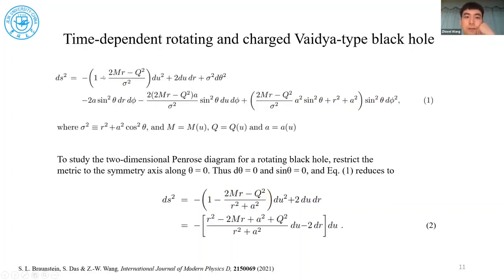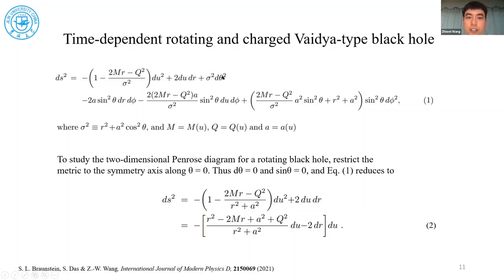This is the metric we use — a rotating charged, Kerr-Newman-type black hole. Since we are assuming the black hole is evaporating, we require the mass, the charge, and the angular momentum to depend on the coordinate time mu. To study the two-dimensional Penrose diagram for this rotating black hole, we restrict the metric to the symmetry axis along theta equals zero. Since theta equals zero means d-theta equals zero and sine-theta equals zero, all those terms vanish, and the metric on this axis reduces to something like a double null coordinate form.